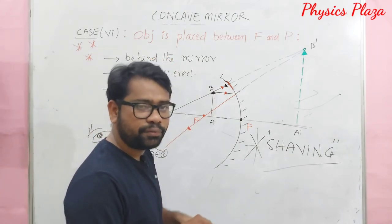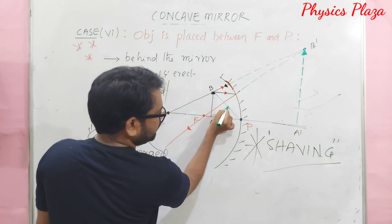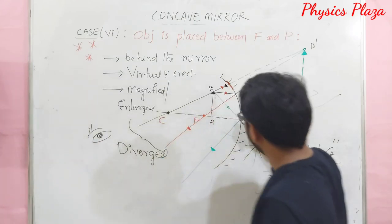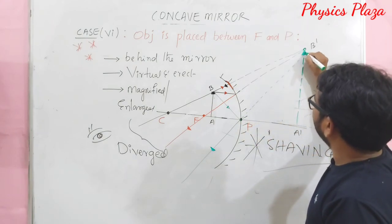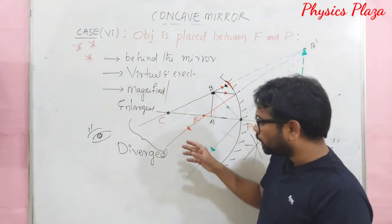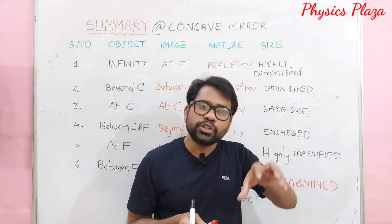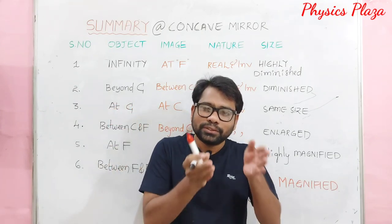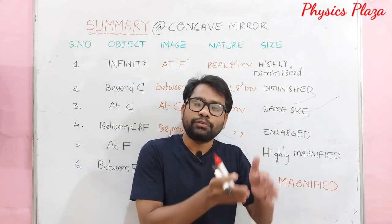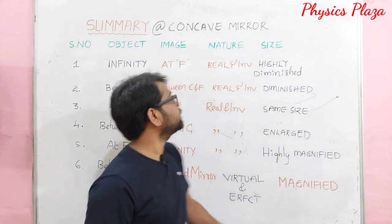Three important observations from the summary table. First, Case 1 and Case 5 are vice versa: object at infinity gives image at focus, and object at focus gives image at infinity. Second, Case 2 and Case 4 are vice versa: object beyond C gives image between C and F, and object between C and F gives image beyond C. Third case and sixth case are special — Case 3 gives same size and position, and Case 6 gives the only virtual image.